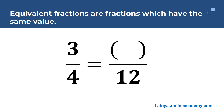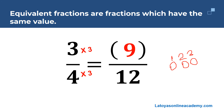Here I have three quarters is equal to something over 12. I'm going to pay particular attention to my denominators. I'm going from a small denominator to a big denominator, so the operation would be to multiply. Multiply by how much? If you don't know, you can count in fours until you get to 12 using your fingers or counters: four, eight, twelve. So I have to multiply four three times. If I multiply my denominator by three, I also have to multiply my numerator by three. Three threes are nine, so three quarters is equivalent to nine over 12.